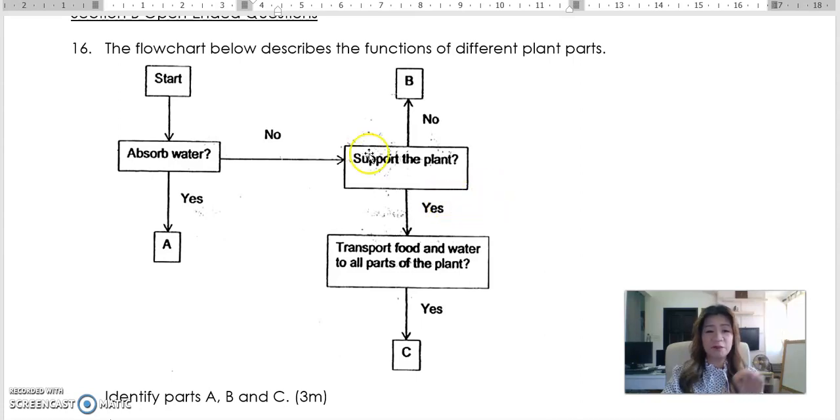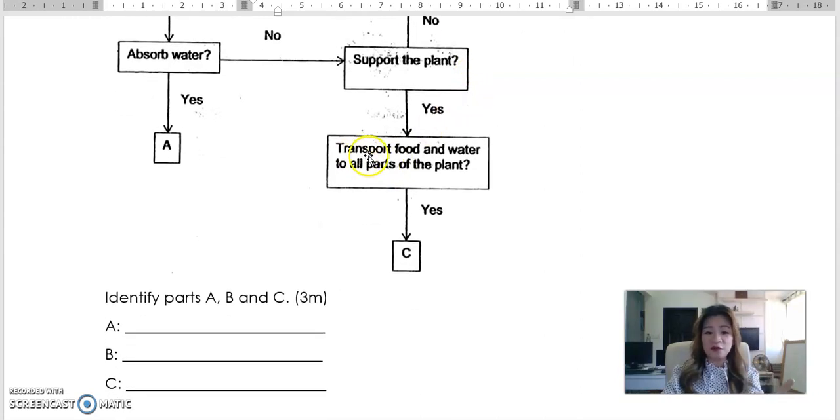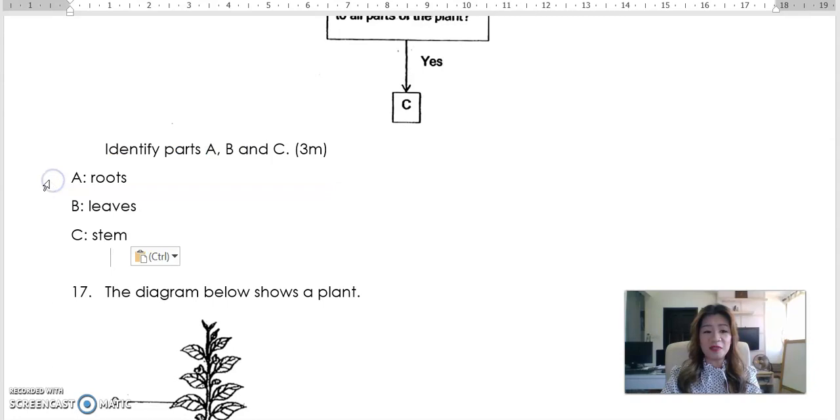The flowchart below describes the functions of different plant parts. At the start, does it absorb water? No. What are the plant parts that does not absorb water? The only plant part that absorbs water is the root. So the only one that absorbs root is A. What about those that does not absorb water? It will be the leaf and the stem. So does it support the plant? If it's yes, obviously it is the stem. If it's no, it has to be the leaf. The leaf does not support the stem. So just to double confirm, it transports water and food to all parts of the plant? Yes, that is the stem. So therefore, what is the answer for A, B, and C? It will be A is roots, B is leaves, and C is stem.